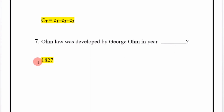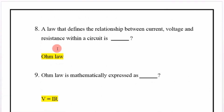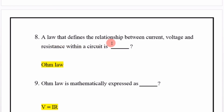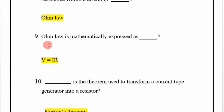Ohm's Law was developed by George Ohm in the year 1827. It is a law that defines the relationship between current, voltage, and resistance within a circuit.